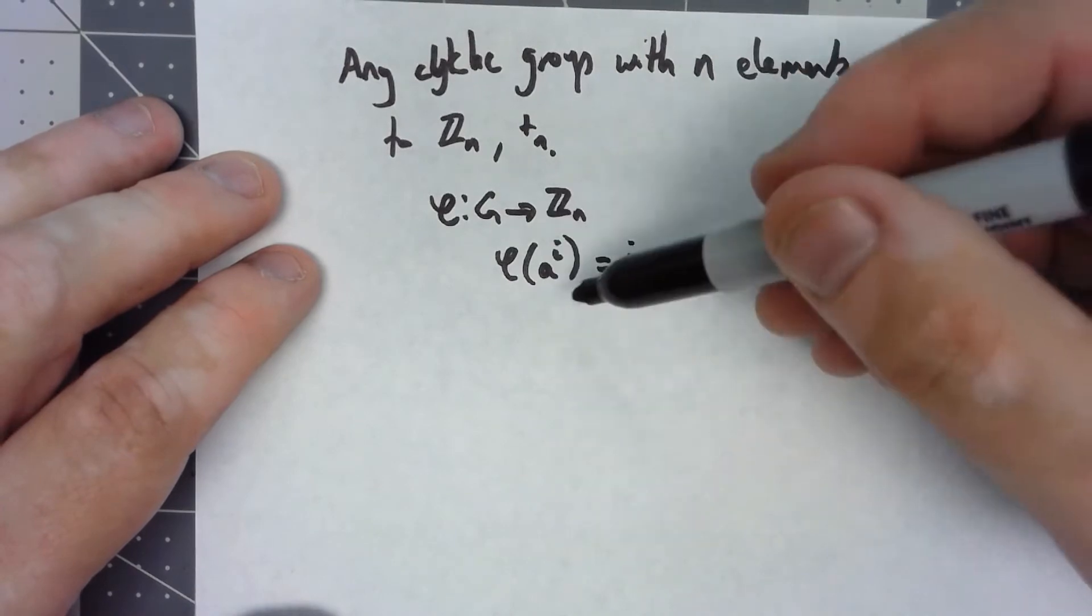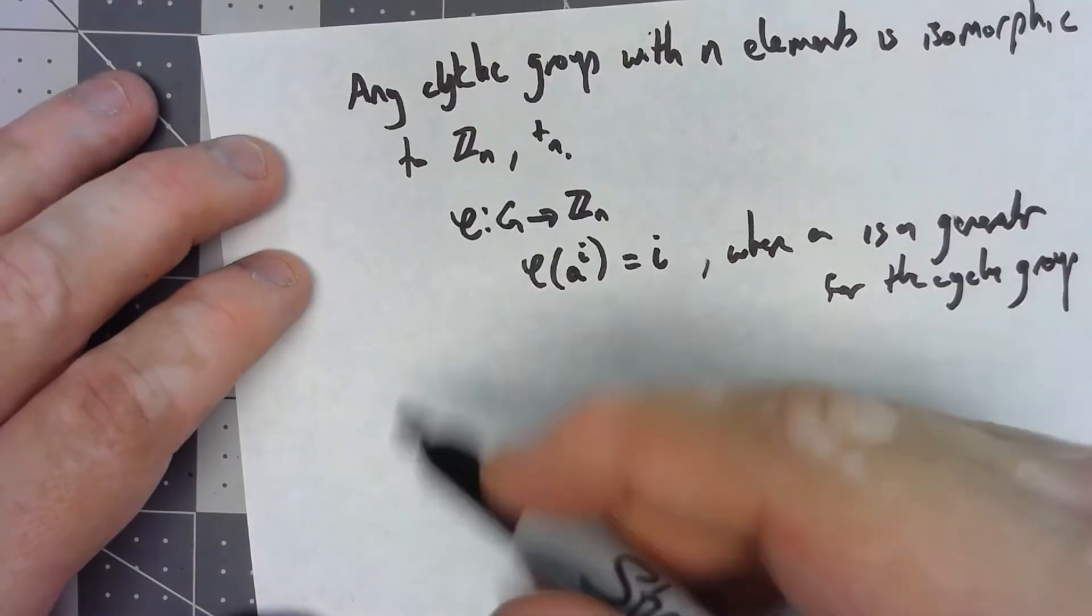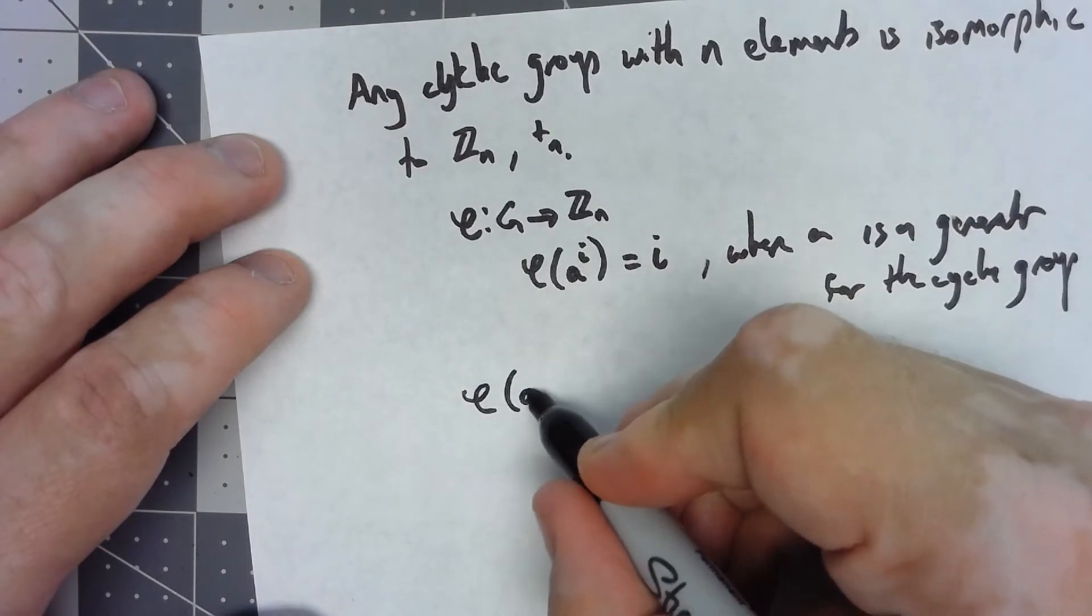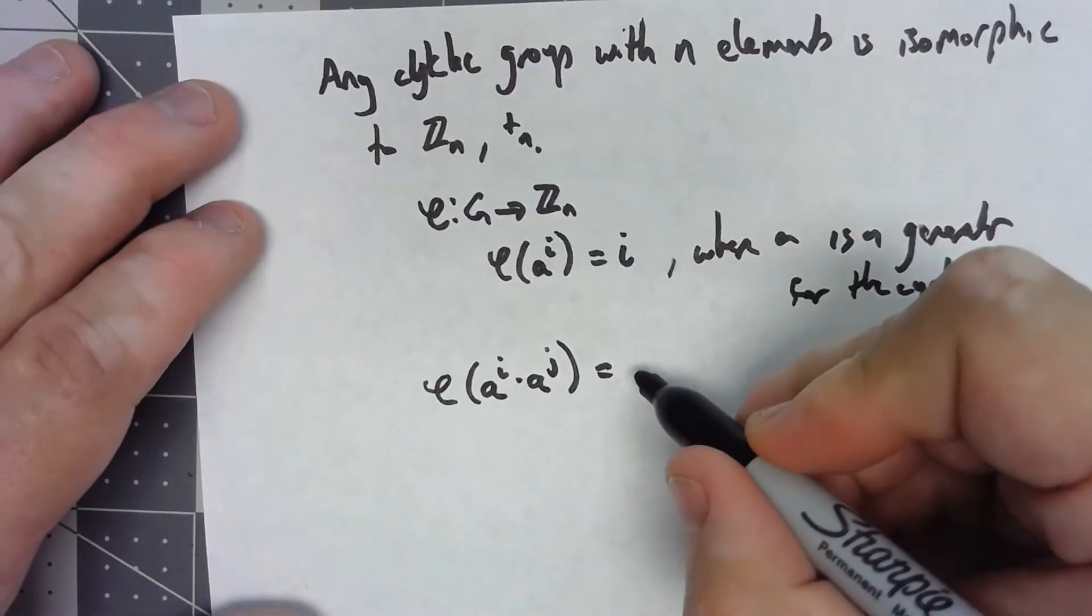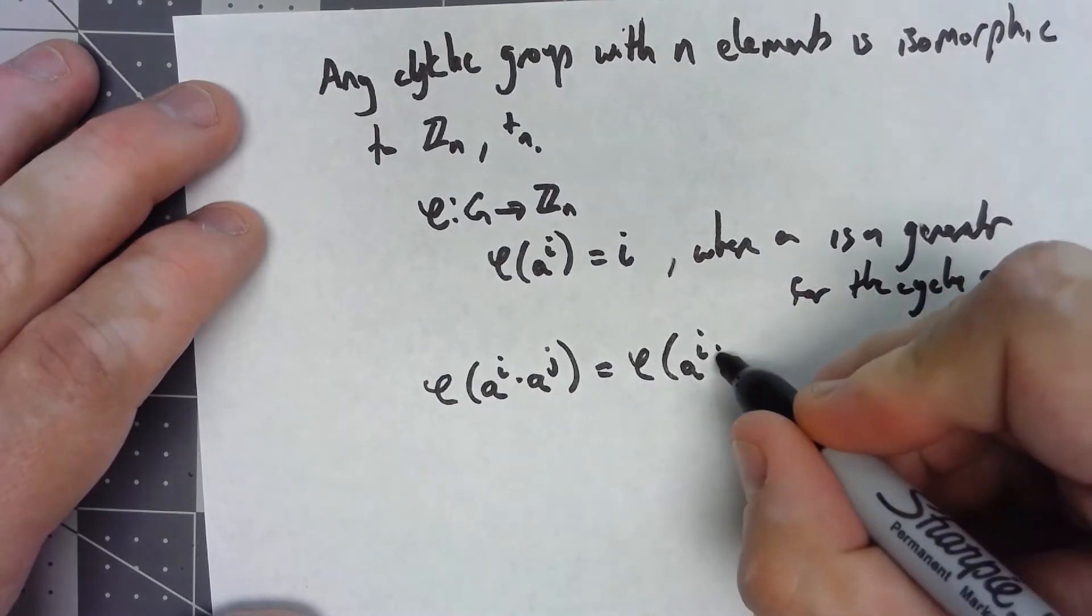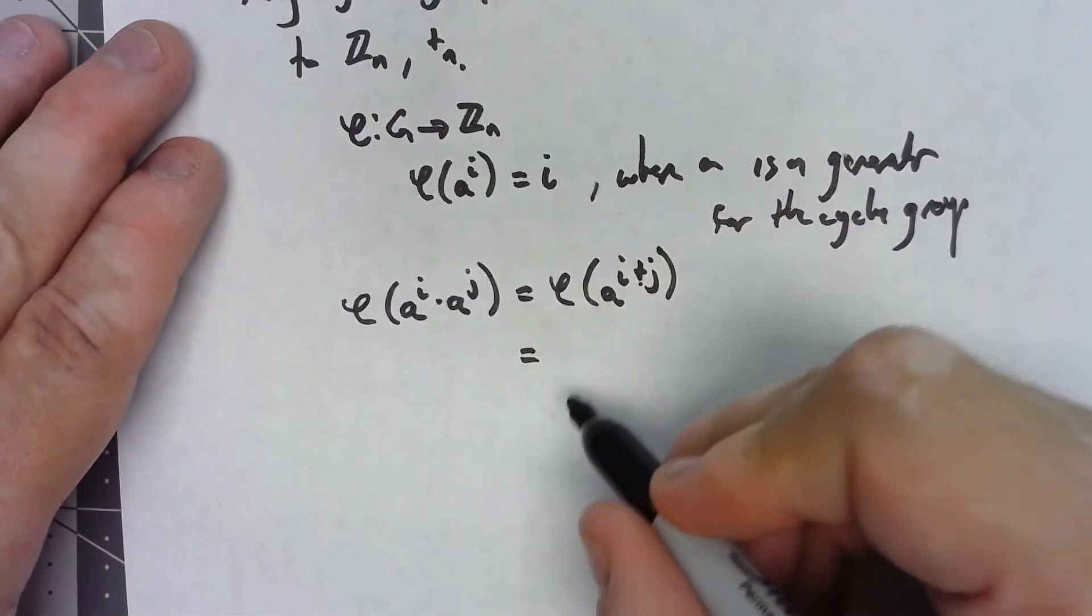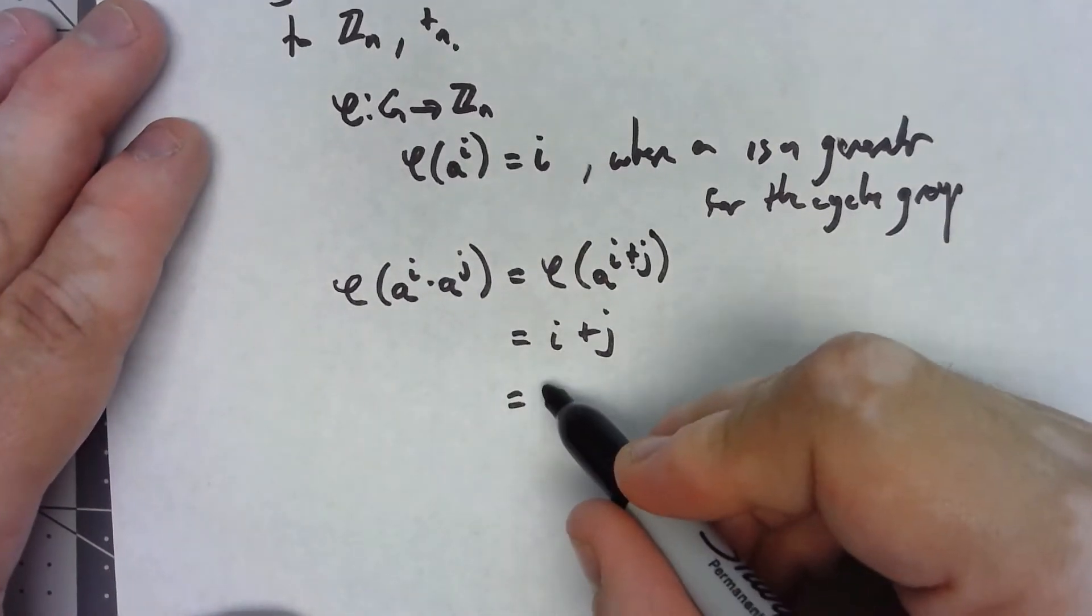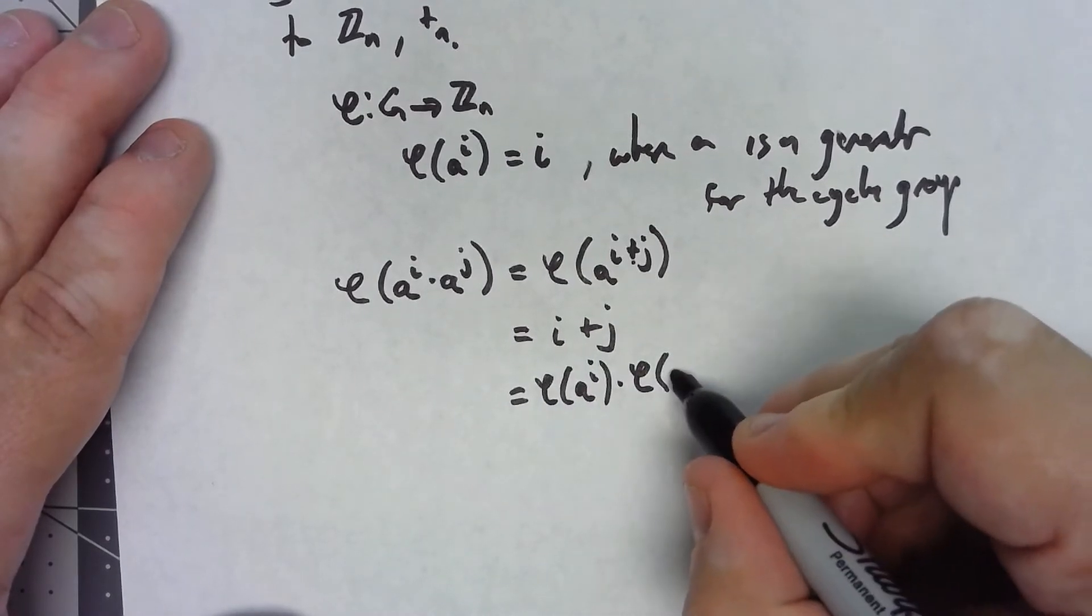I'll leave it to you to show that this thing is one-to-one and onto. Let's focus on that homomorphism property. So if I have phi of A sub i times A sub j, that's going to equal phi of A^(i+j). That's going to be i plus j. But that's phi of A sub i times phi of A sub j.